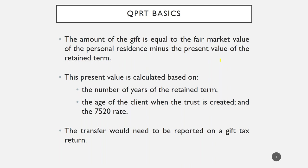Because it's the gift of a remainder interest in the residence, the gift unfortunately does not qualify for the annual exclusion. The annual exclusion allows an individual to make a gift of up to $15,000 per beneficiary each year without using up any lifetime gift exemption. Currently, the lifetime gift exemption for each individual is $11,180,000, subject to upward inflation adjustments. Many clients — especially under the new tax act — have a lot of unused exemption they can use.